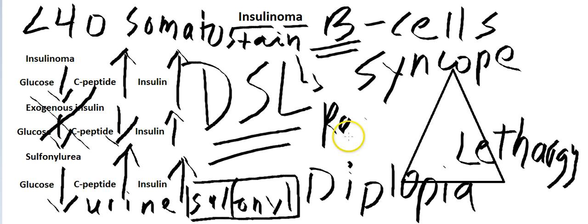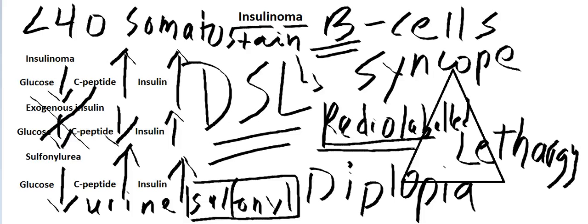You're going to give someone radiolabeled somatostatin and then this will tell you the location. Also you might do a CT scan and it might show you the location as well, and ultrasonography. These are the couple of different ways you can find out the location and these are the tests you can perform to distinguish between insulinomas, sulfonylurea toxicity, and exogenous insulin.